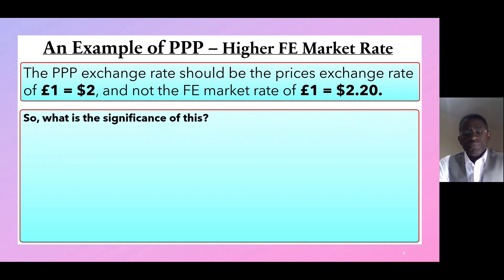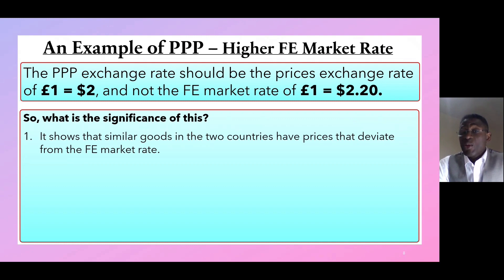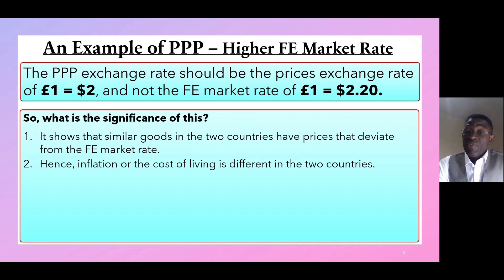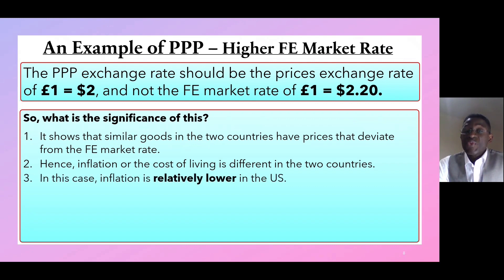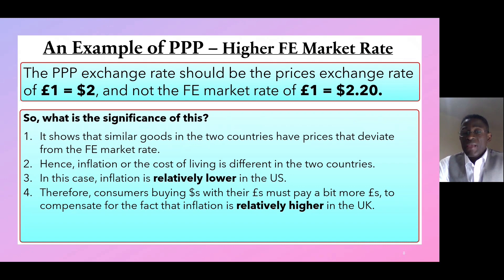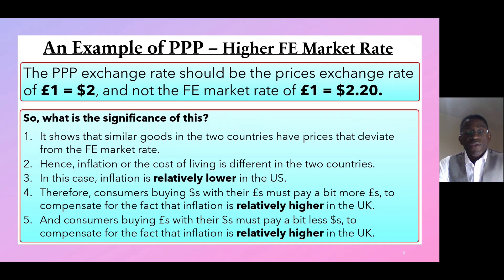What is the significance of this? Number one, it shows that similar goods in the two countries have prices that deviate from the foreign exchange market rate. Number two, inflation or the cost of living is different in the two countries. Number three, in this case inflation is relatively lower in the US. Number four, consumers buying dollars with their pounds must pay a bit more pounds to compensate for the fact that inflation is relatively higher in the UK. Number five, consumers buying pounds with their dollars must pay a bit less dollars to compensate for the fact that inflation is relatively higher in the UK.